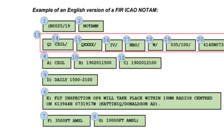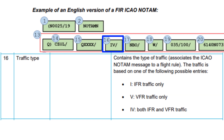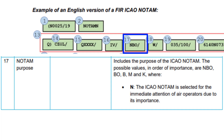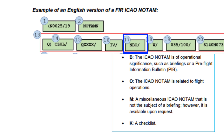Up next will be the traffic type, where I is for IFR traffic only, V is for VFR traffic only, and IV stands for IFR and VFR traffic. The next field tells you the purpose of the NOTAM. The possible values are NBO, BO, B, M, or K. N means the NOTAM is for immediate attention of air operators due to its importance. B means the NOTAM is of operational significance, such as briefings or preflight information bulletins. O signifies the NOTAM is related to flight operations. M means it's miscellaneous and not the subject of a briefing but available on request. And K means it relates to a checklist.